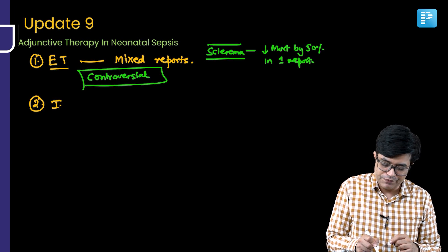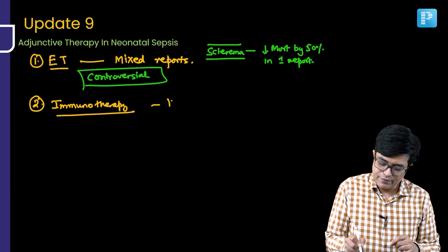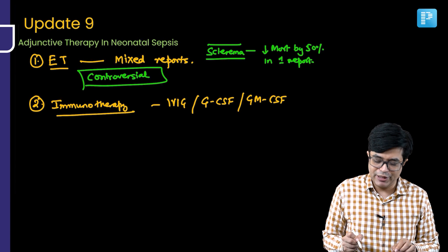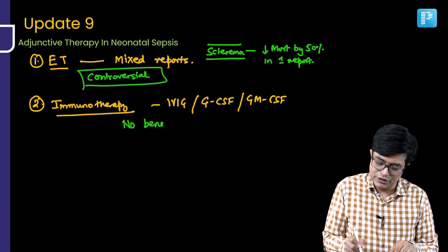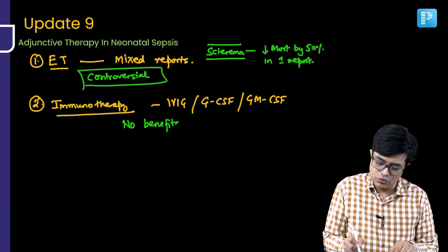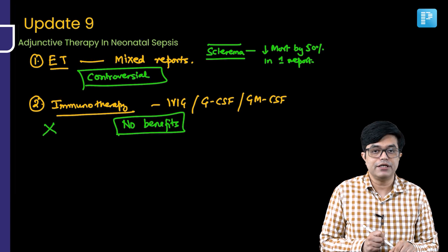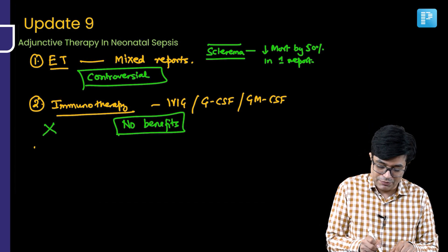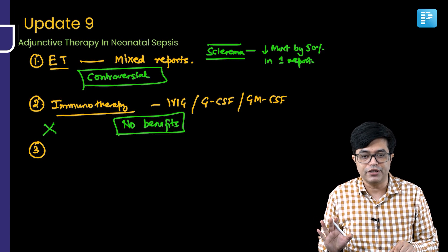Second is immunotherapy in the form of IVIG, G-CSF, or GM-CSF. Cochrane studies have been done and show no benefits, so immunotherapy is not routinely recommended. Although some people still use IVIG, it is not routinely recommended.